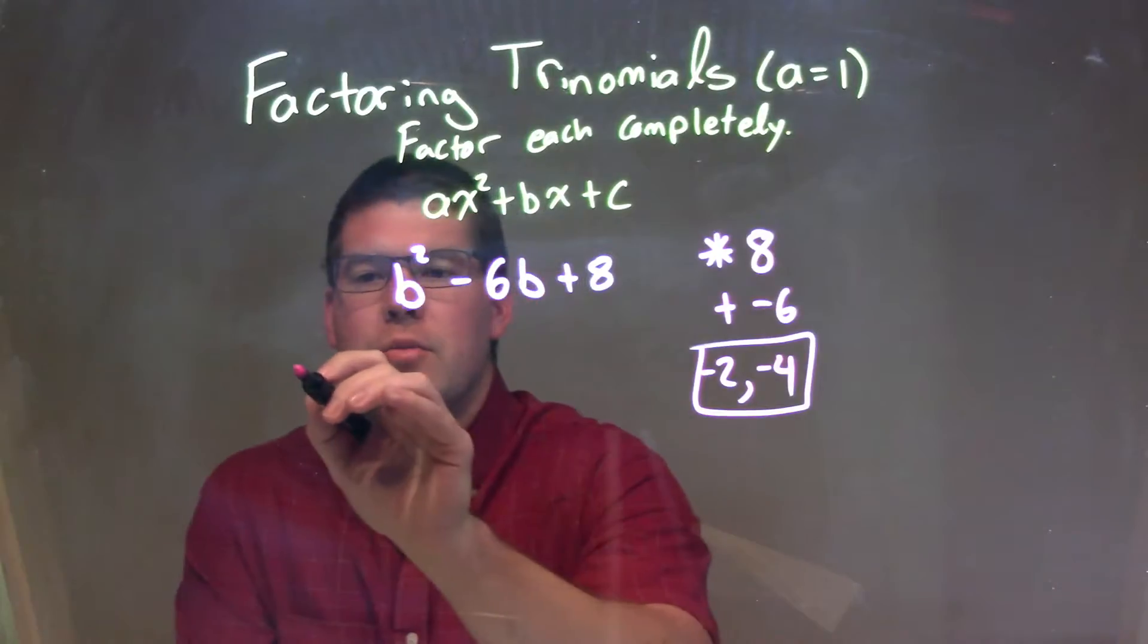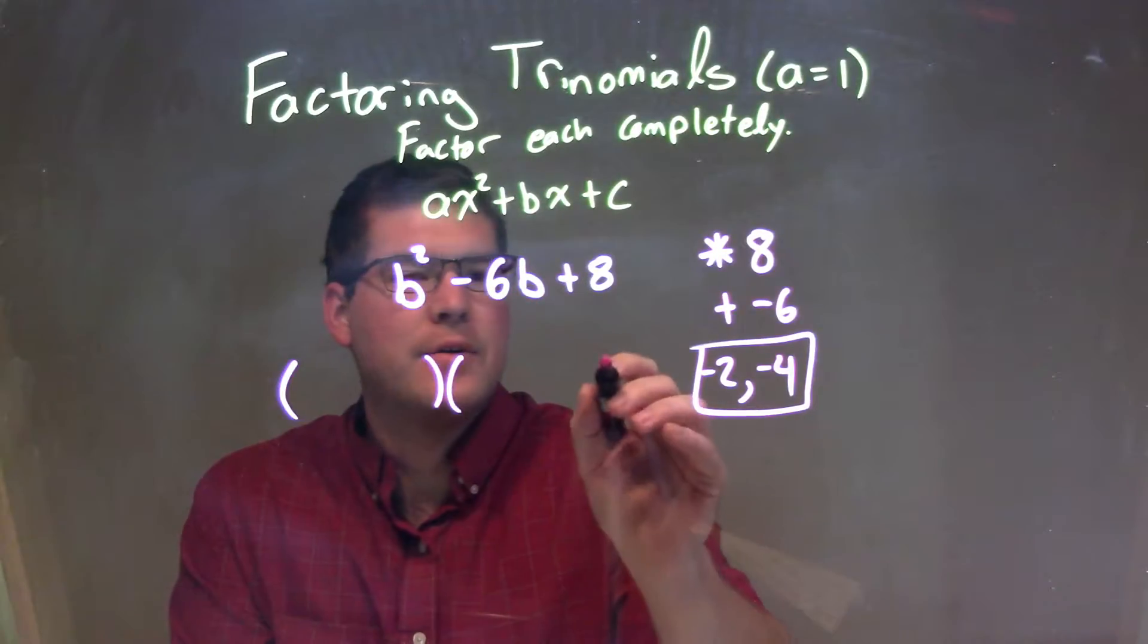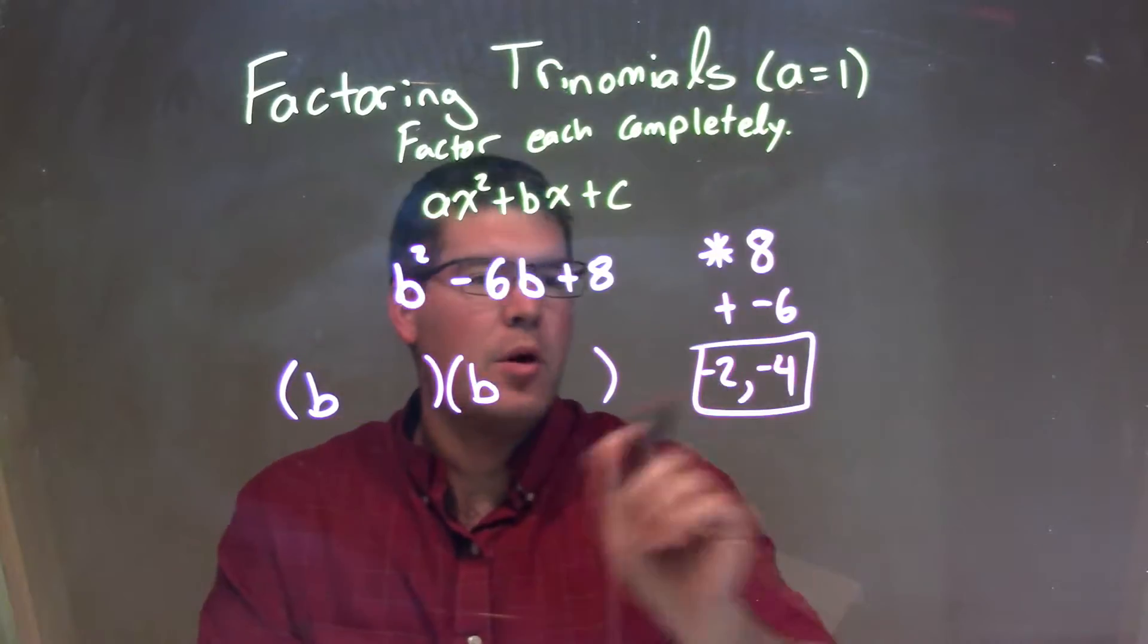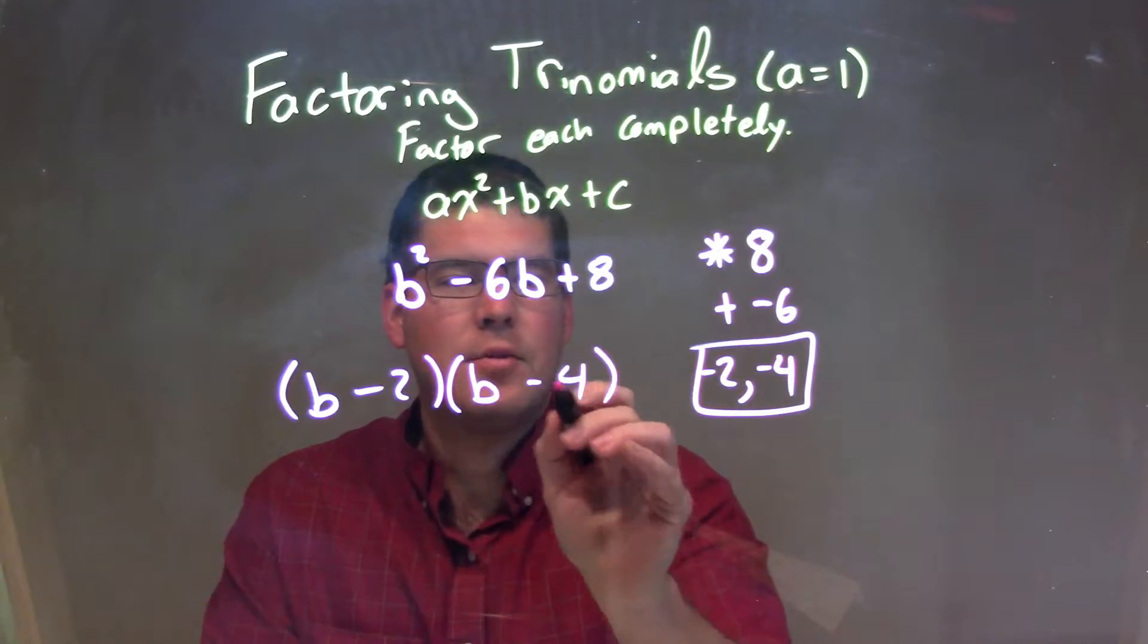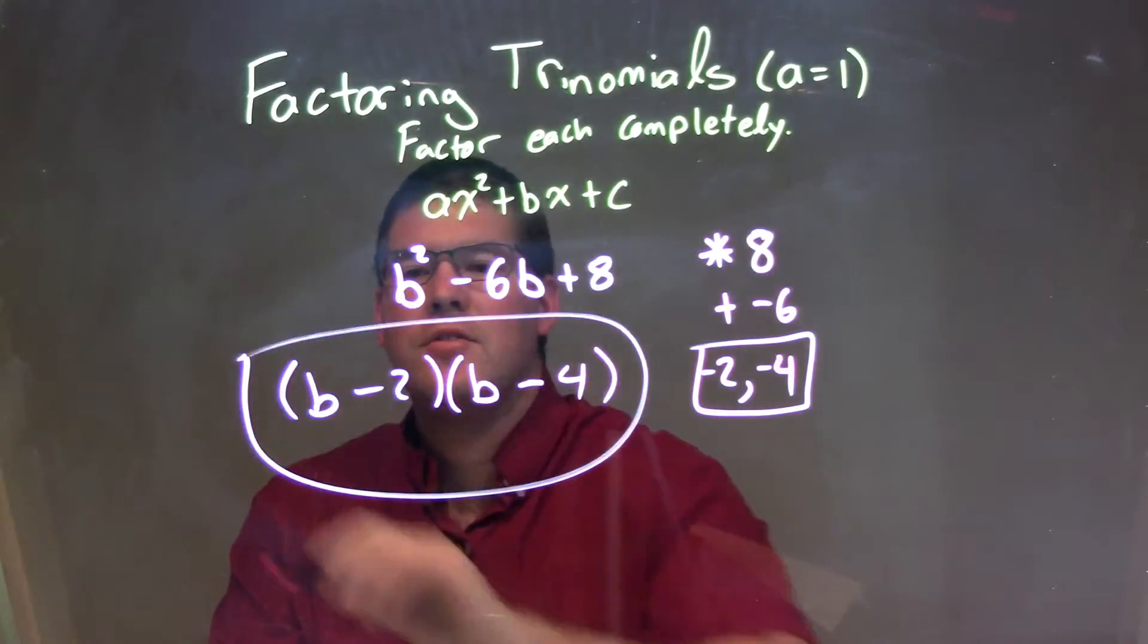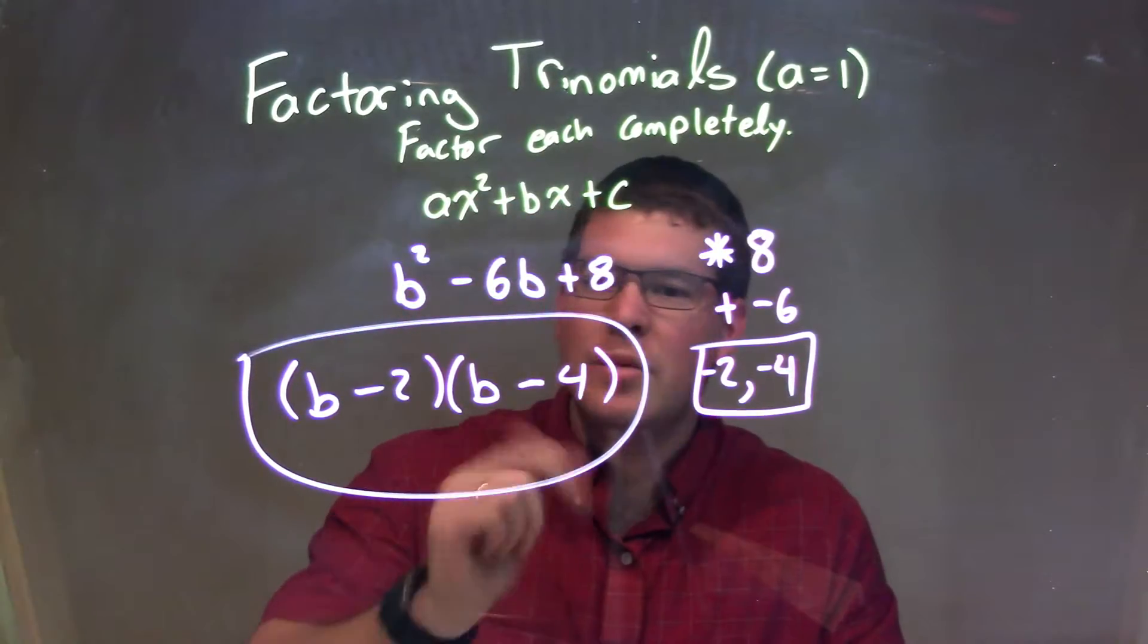So we can break this apart into two parentheses, and we factor. We're going to have b at the beginning of each one. Then we're going to take both these numbers and just minus 2 and minus 4. Our final answer here is just b minus 2 times b minus 4.